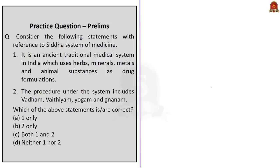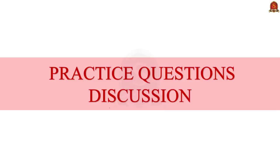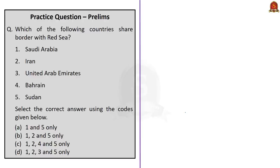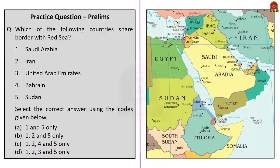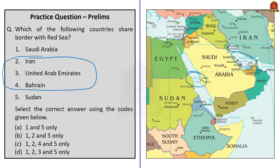We have now come to the practice questions discussion session. The question asks which of the following countries share a border with the Red Sea: Saudi Arabia, Iran, United Arab Emirates, Bahrain, or Sudan. Iran, UAE, and Bahrain share a border with the Persian Gulf, not the Red Sea. Sudan and Saudi Arabia share a border with the Red Sea, along with other countries like Egypt, Eritrea, and Yemen. Note that South Sudan is a landlocked country. The correct answer is option A: one and five only.